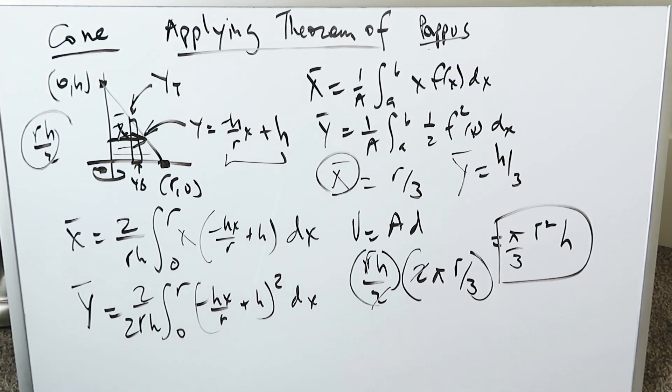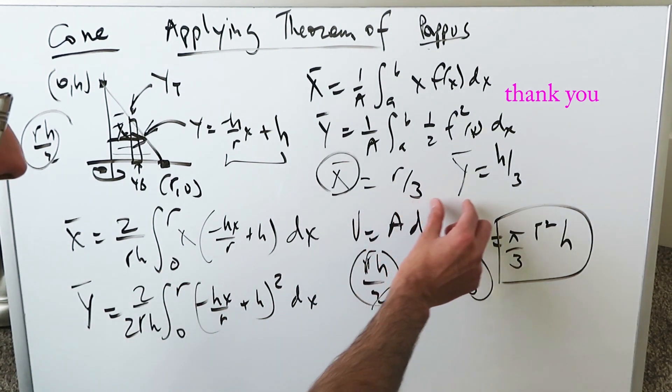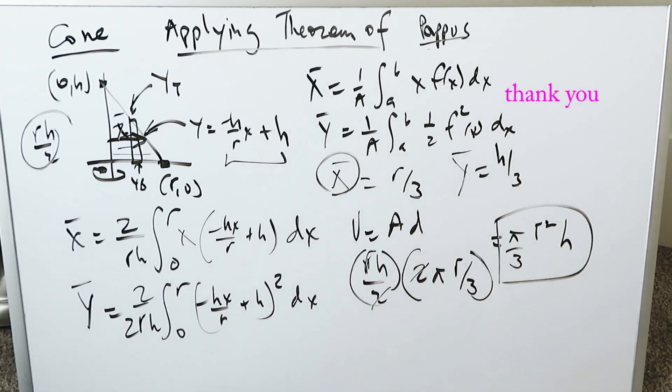Again, when you're looking at this particular procedure here by means of this theorem for the cone, the hardest part is none of this. The hardest part is just this: the centroid determination and the algebra and the simplification which come with it with regards to your definite integration procedure. But the procedure here, everything is good. The centroid value r over 3, h over 3 is right. There's no mistake in that. Thank you for watching.